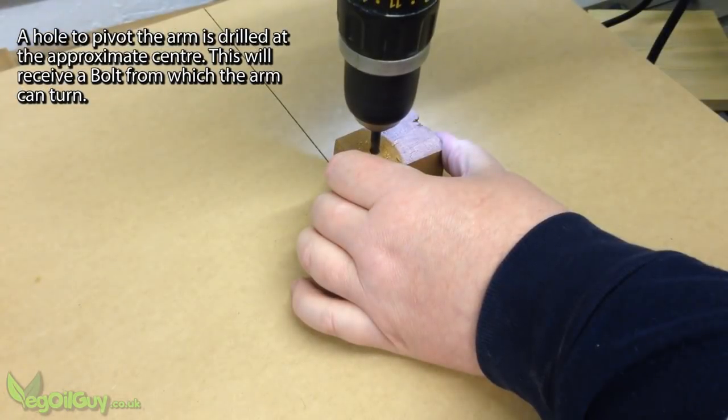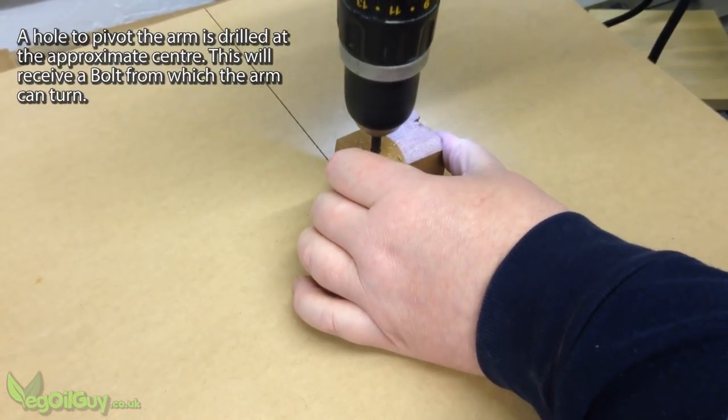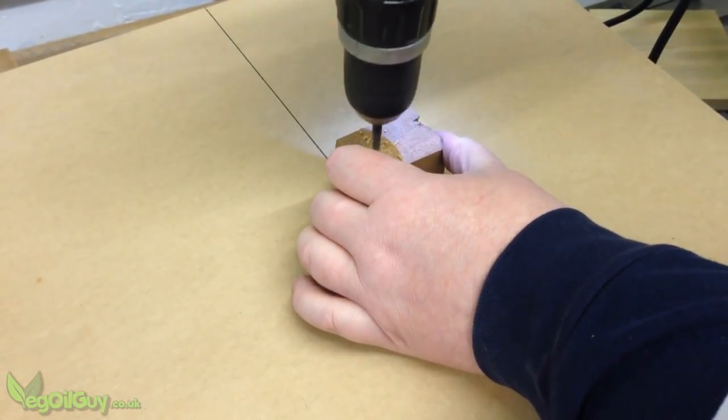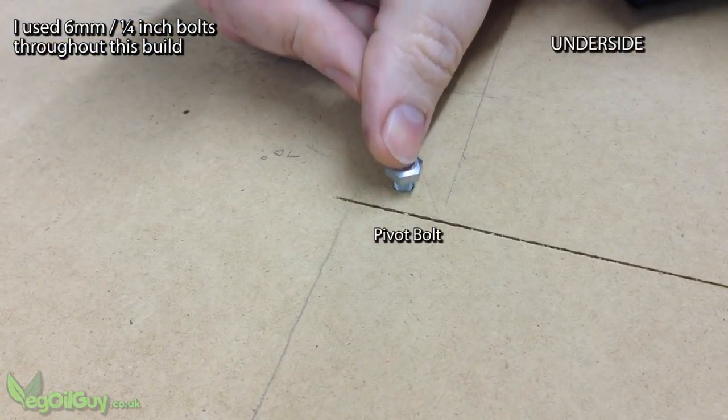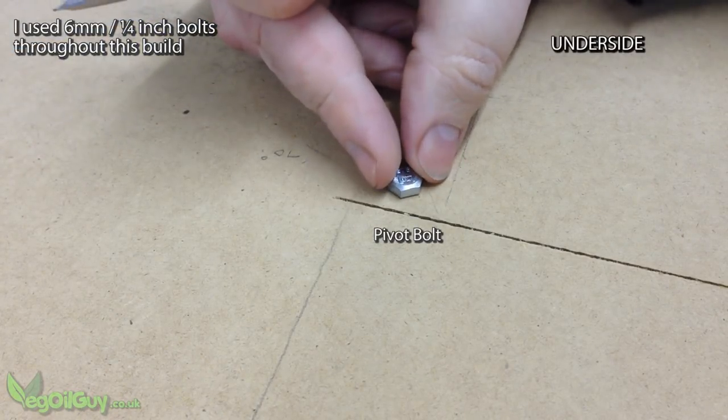It's important that this hole is perpendicular, so I used a drilled block as a guide. A bolt the same diameter as the hole was pushed through from underneath.